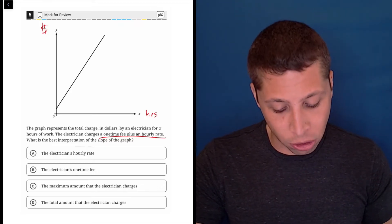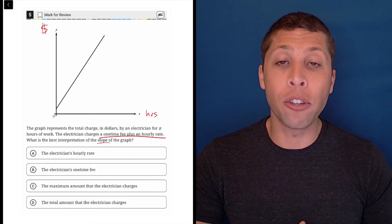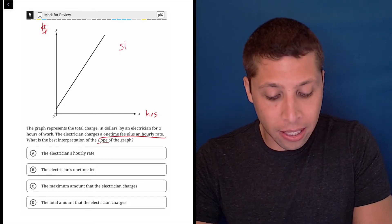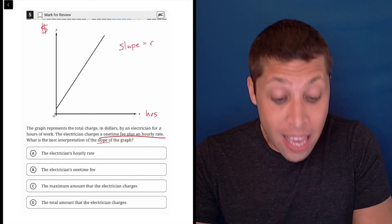What is the best interpretation of the slope of the graph? Well, this is where we do need to do a little bit of memorization. Basically, a slope is a rate.